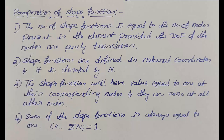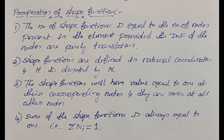To summarize the properties of shape function: first, the number of shape functions equals the number of nodes present in the element, provided the DOF of the nodes are purely translation. Second, shape functions are defined in natural coordinates and denoted by N. Third, shape functions have a value of 1 at their corresponding nodes and 0 at all other nodes. Fourth, the sum of all shape functions is always equal to 1, i.e., Σ Ni = 1. These properties are required in order to derive the shape functions.